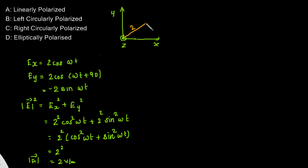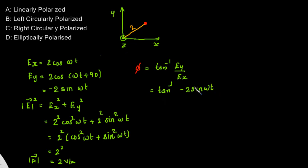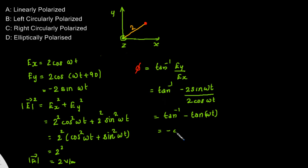Now we look at the phase. The phase φ = tan⁻¹(Ey/Ex) = tan⁻¹(−2sin(ωt) / 2cos(ωt)) = tan⁻¹(−tan(ωt)) = −ωt. So the phase equals −ωt.